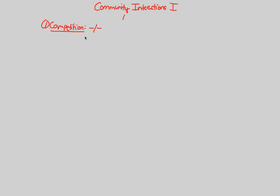Competition is what we consider a minus-minus interaction. This minus-minus interaction means it's an interaction within the community that's going to be between two individuals — thus there are two minuses. Two individuals engage in this interaction of competition, and this interaction is costly to both. Because it's costly to both, both will lose in a competition scenario. That's competition in a nutshell.